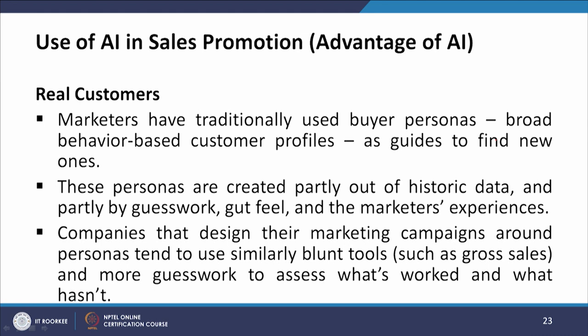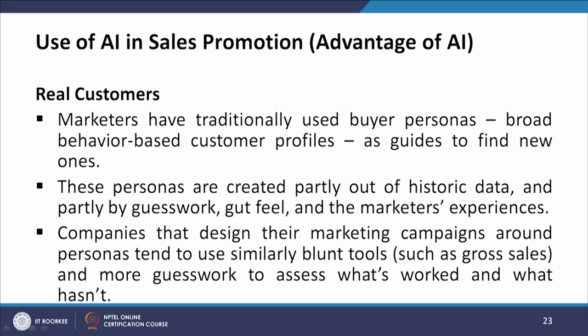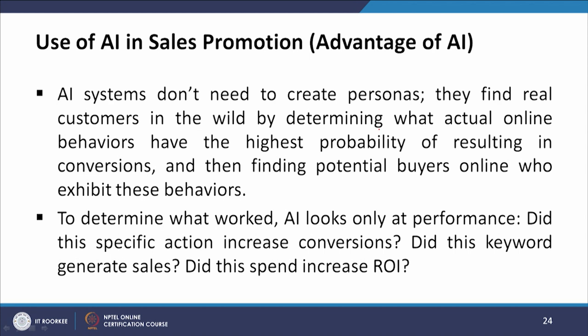Marketers have traditionally used buyer personas — broad behavior-based customer profiles — as guides to find new customers. These personas are created partly out of historic data and partly by guesswork, gut feeling, and marketers' experiences. AI systems do not need to create personas; they find real customers by determining which actual online behaviors have the highest probability of resulting in conversions, and then finding potential buyers online who exhibit these behaviors. To determine what worked, AI looks only at performance: did this specific action increase conversions? Did this keyword generate sales? Did this spend increase ROI?